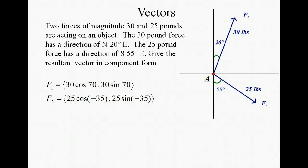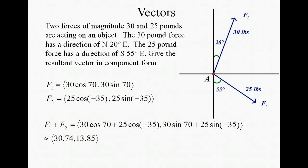So for the first vector we have 30 pounds and our angle is 70 again coming off the positive x-axis. And for our second force our angle is negative 35 and our weight is 25. Again, we're getting the negative 35 because we're measuring off the positive x-axis down to the vector. So we have a negative angle of 35 degrees. Now what we want to do is add those two vectors together. So remember when you're adding vectors together you're adding your x coordinates together and you're adding your y coordinates together. So we ended up with approximately 30.74 and 13.85 as our resultant vector or the sum of vectors f1 and f2.